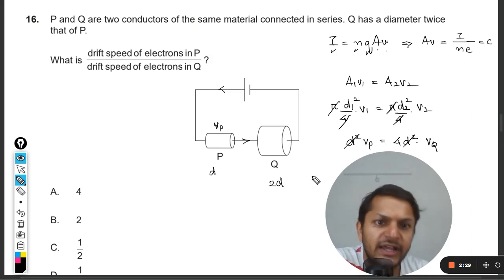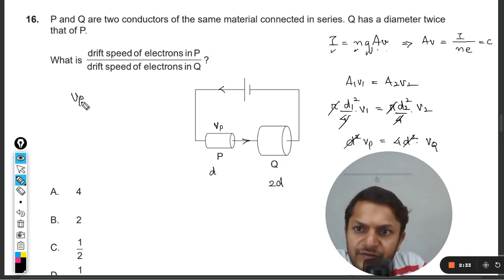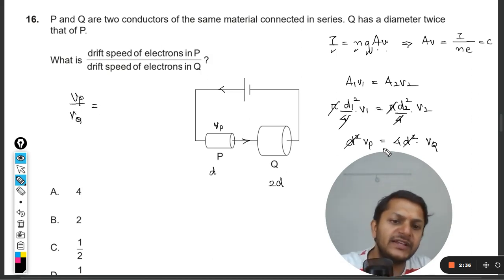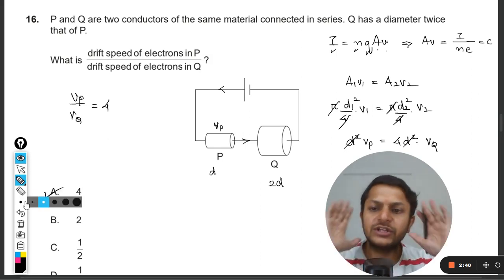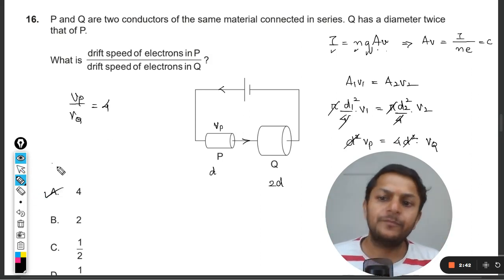And the diameter here is 2d, so that will become 4d square. This will be Vq. d square and d square again gets cancelled out. So drift velocity in P, it means that Vp divided by Vq from this equation can be equated with the 4. And so the answer will be 4, and this is how we do this question.